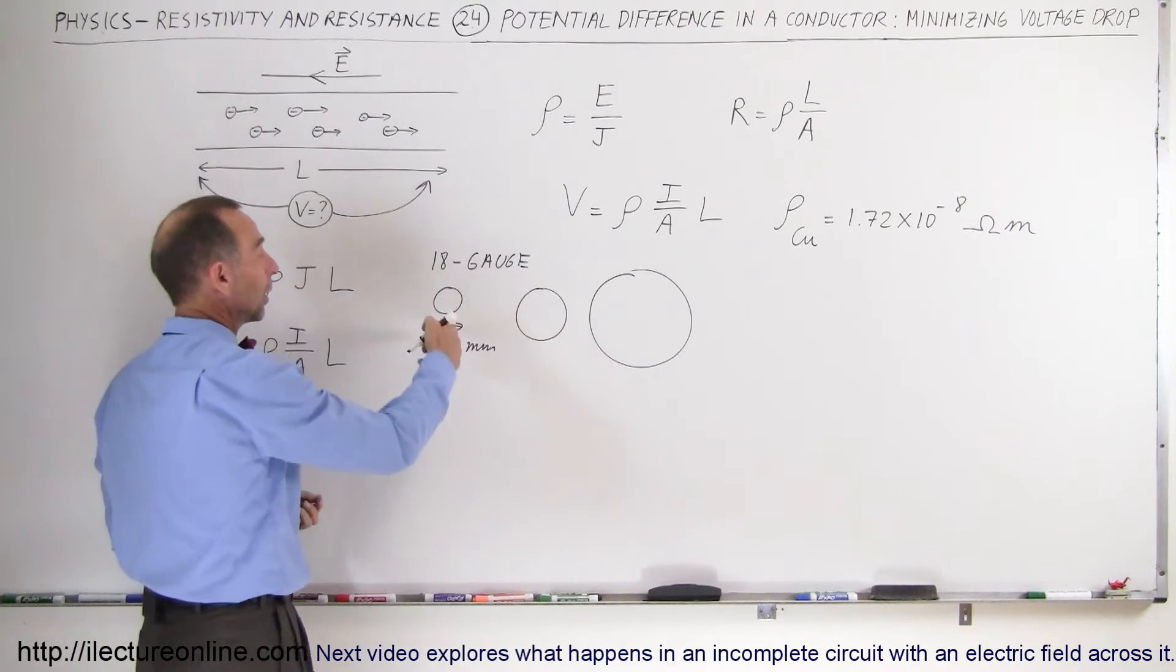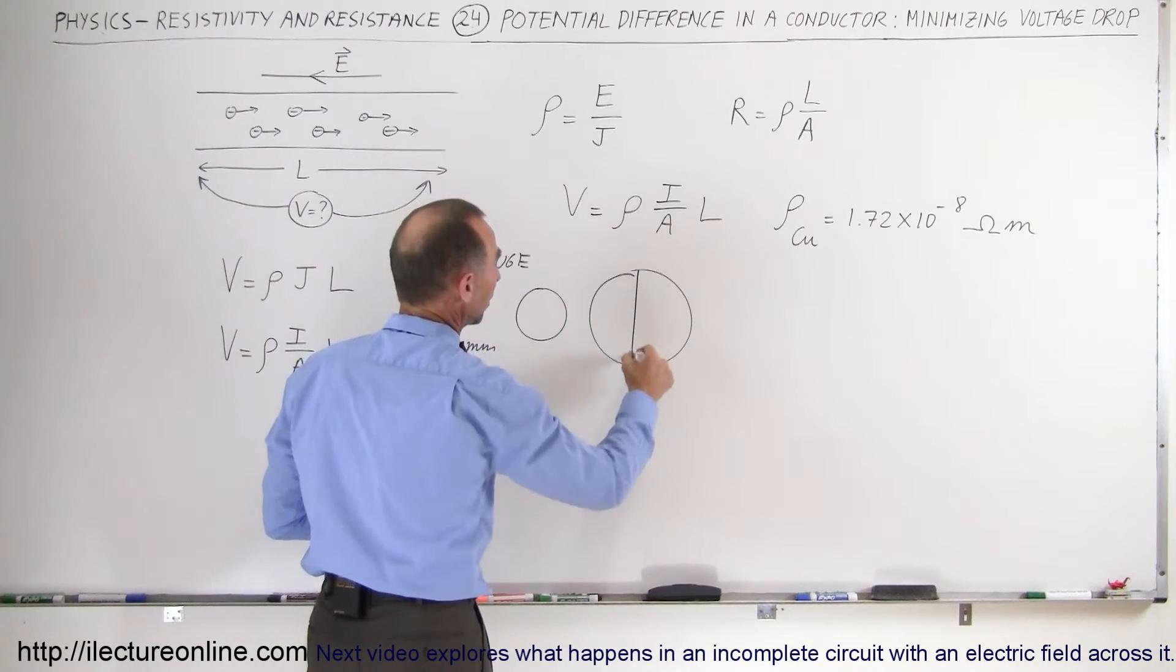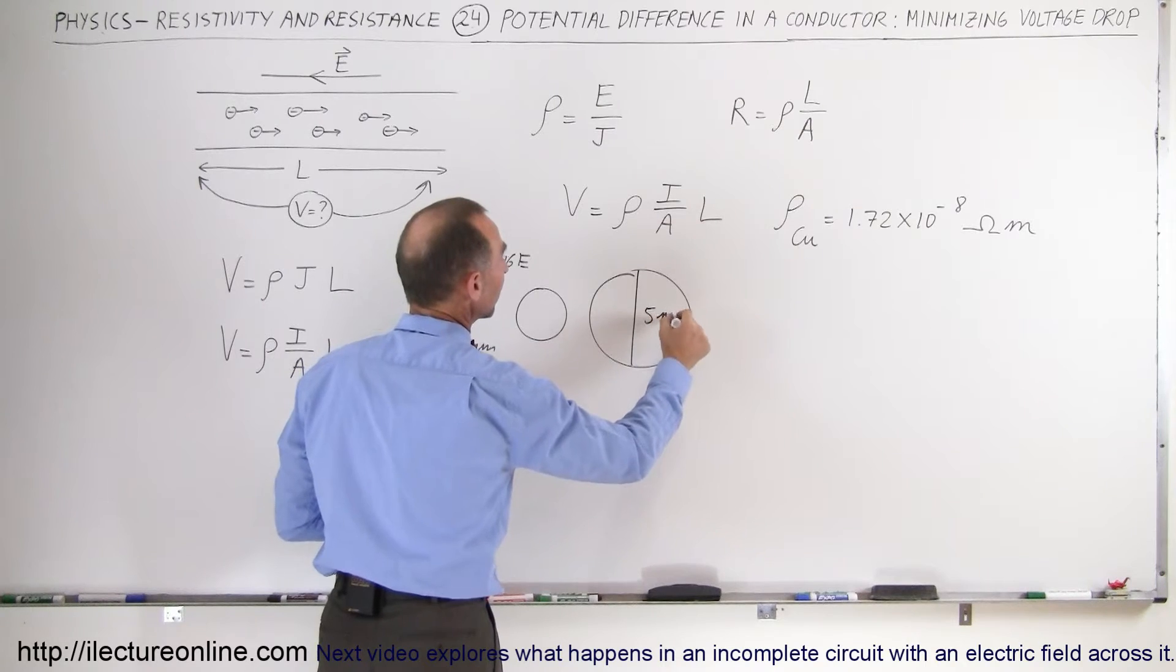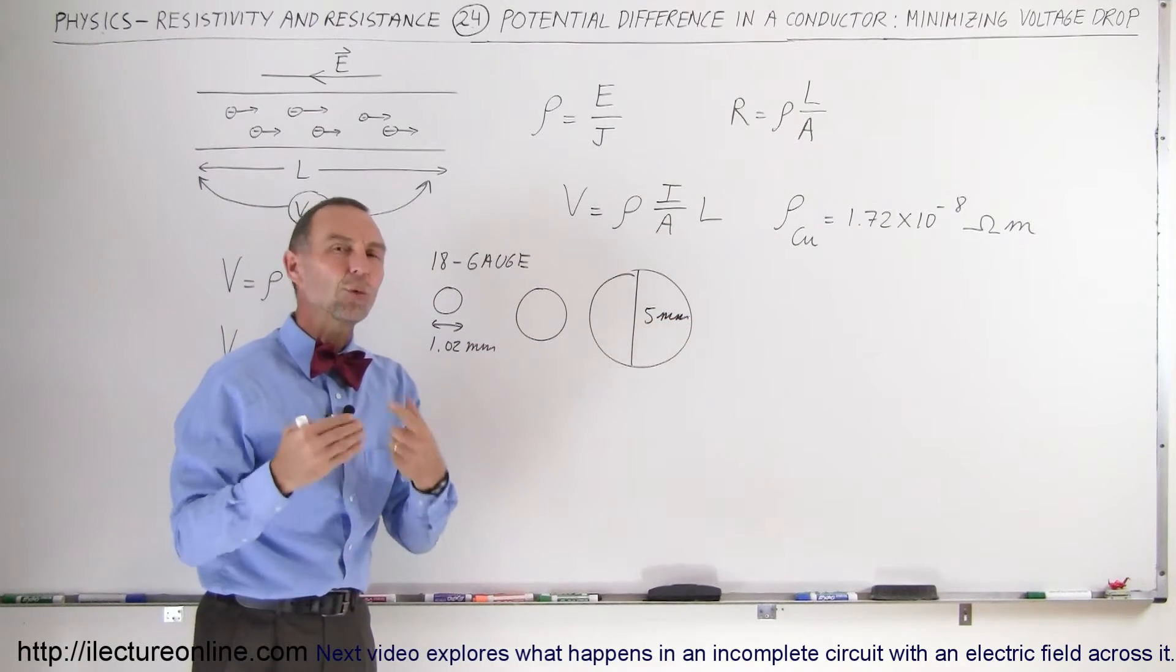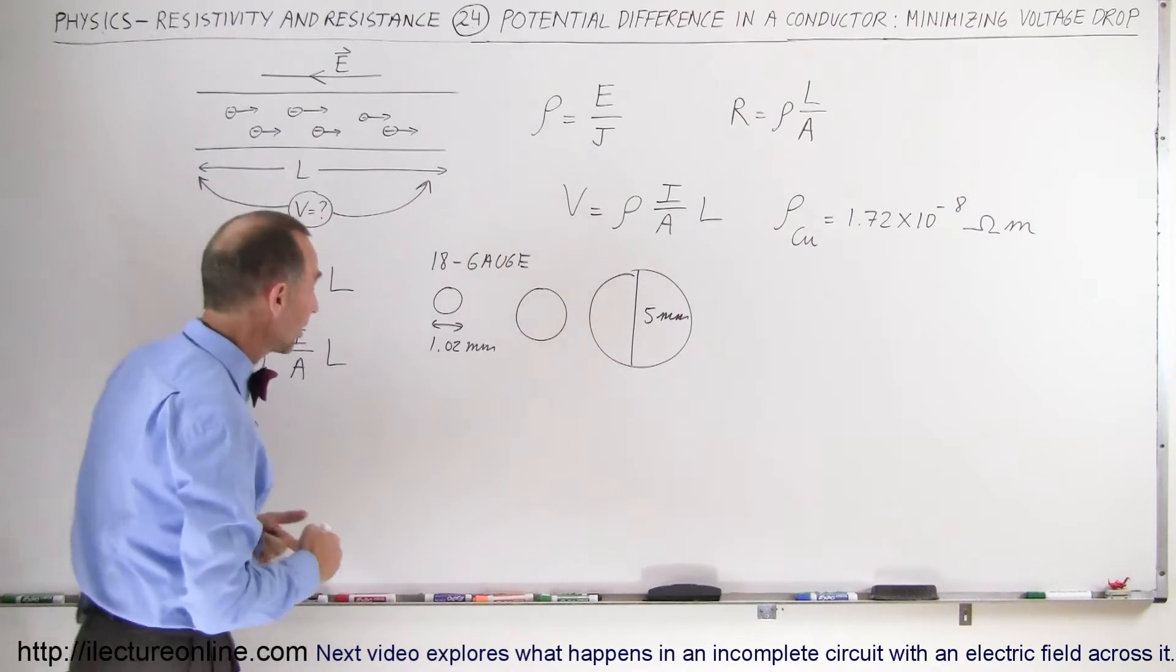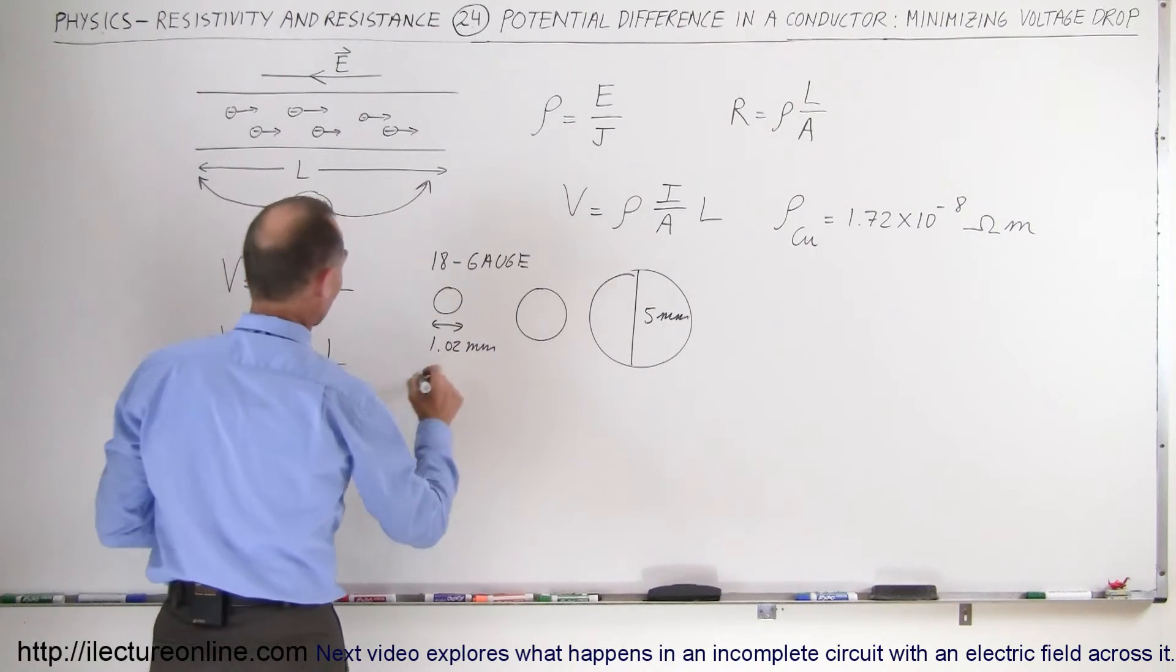Let's say that we have a 1 mm wire, and instead of 1 mm wire, we go to a 5 mm diameter wire. 5 times the diameter, which means 25 times the cross-sectional area. So if we call this area 1, cross-sectional area 1, we call this cross-sectional area 2.